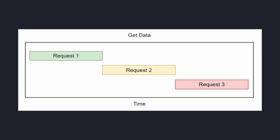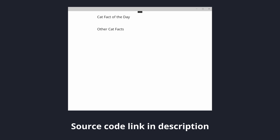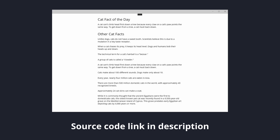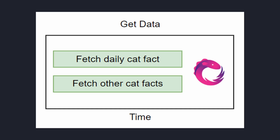Rather than making long, asynchronous requests one by one to load our application, let's use reactive extensions to make asynchronous requests in parallel and load our application faster. In this .NET MAUI application, I want to asynchronously fetch the cat fact of the day and also asynchronously fetch a list of cat facts, and will ultimately display this data on the UI. But I don't want to make these requests one by one sequentially, because that'll take extra time and neither of these requests depend on each other.